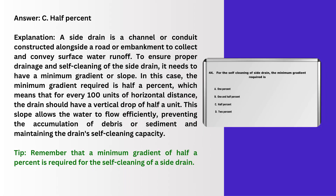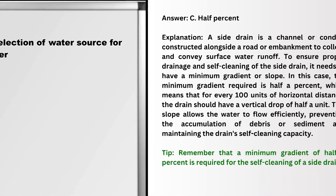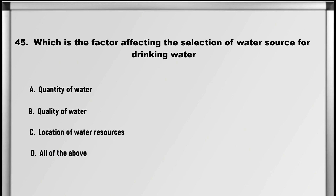Explanation: A side drain is a channel or conduit constructed alongside a road or embankment to collect and convey surface water runoff. To ensure proper drainage and self-cleaning of the side drain, it needs to have a minimum gradient or slope. The minimum gradient required is 0.5%, which means that for every 100 units of horizontal distance, the drain should have a vertical drop of 0.5 units. This slope allows the water to flow efficiently, preventing the accumulation of debris or sediment and maintaining the drain's self-cleaning capacity. Tip: a minimum gradient of 0.5% is required for the self-cleaning of a side drain.